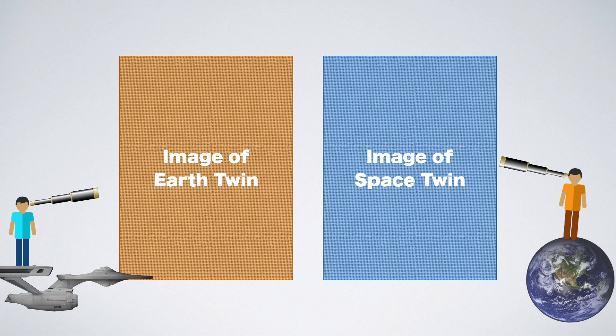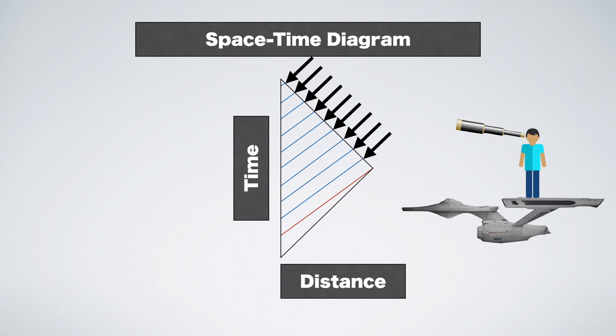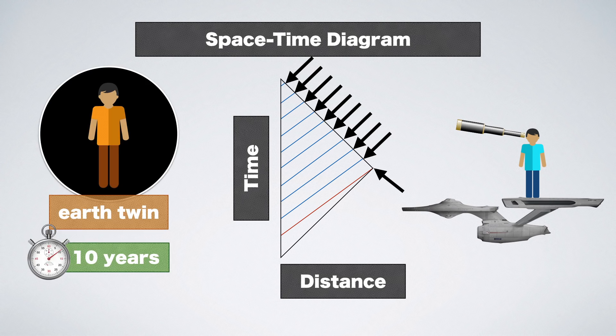The result can be summarized in a space-time diagram. It shows the different paths, through space-time, of Earth Twin, Space Twin, and the images they sent each other. Space Twin sees Earth Twin aged by one year at the turning point, and he will see him age by another nine years after the turning point, so that in total, Space Twin will have seen his brother aged by ten years.